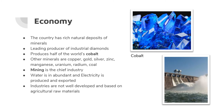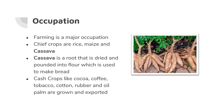Industries are based on agricultural raw materials. The main occupation here is farming. The chief crops are rice, maize, and cassava. Cassava is a root that is dried and pounded into flour.